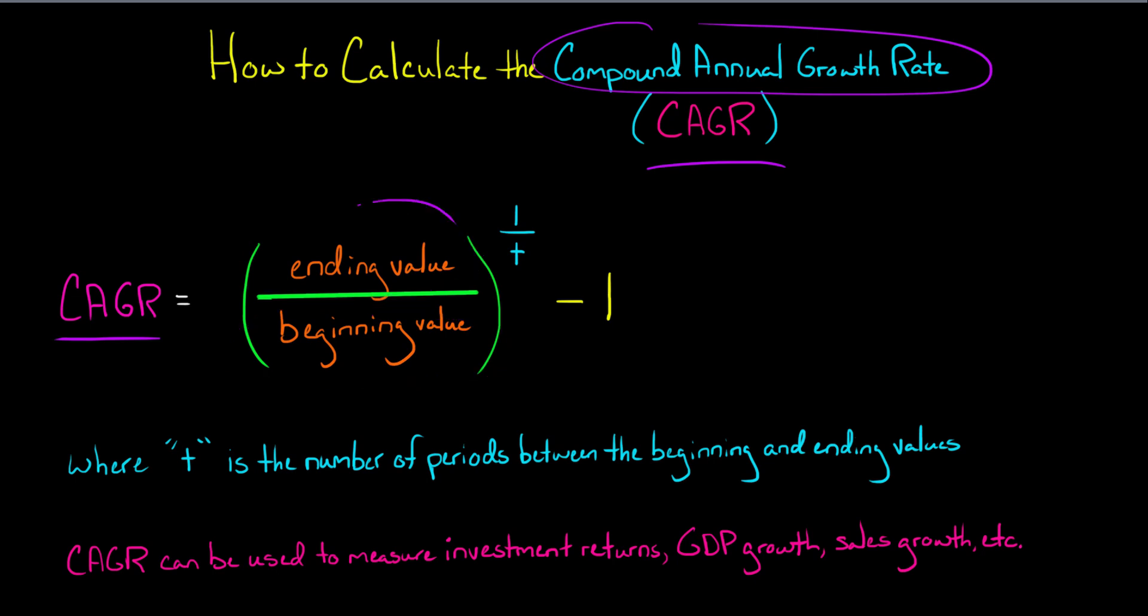We're going to divide that by the beginning value of the investment. And then we're going to raise this number that we calculate here to the 1 divided by t power. And t is the number of periods between when the ending value and the beginning value occur. And then we're going to take this whole thing and subtract 1. Then we're going to get a number and convert that to a percentage.